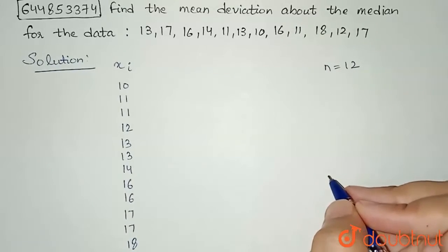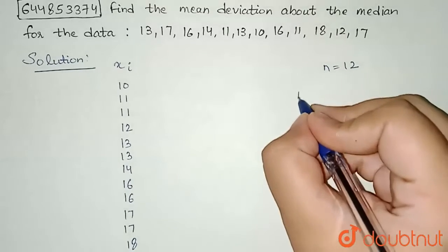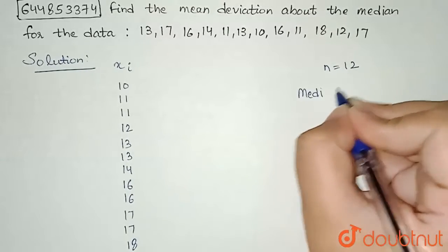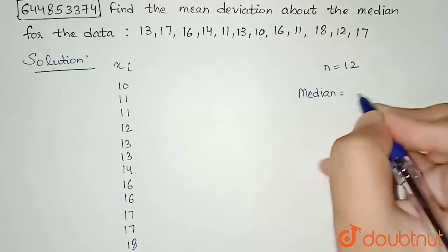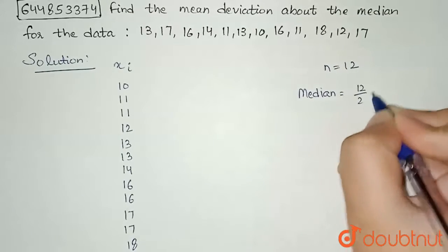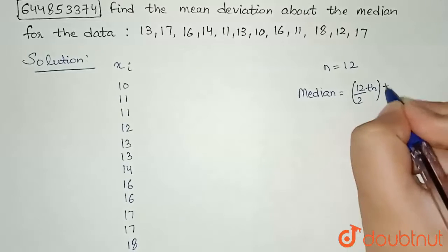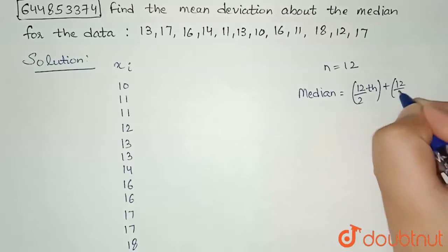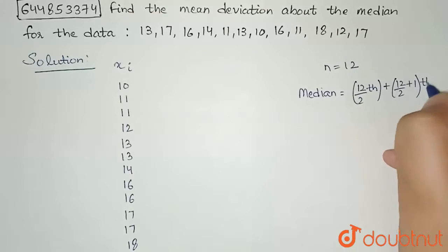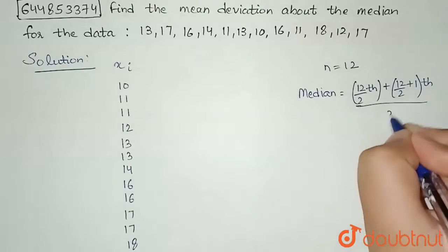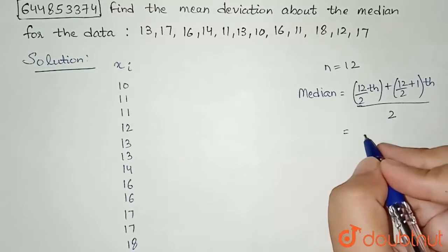For this, when even terms are there, median equals (12/2)th term plus (12/2 + 1)th term, divided by 2. So my (12/2)th term, that is 6th term, plus 7th term, divided by 2.